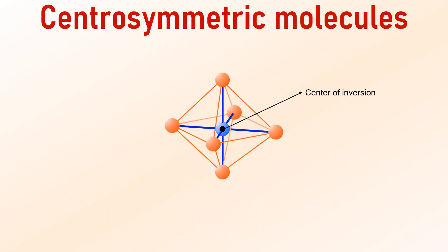An octahedral complex has a distinct structure characterised by six ligands symmetrically arranged around a central metal ion. At the heart of this arrangement lies a centre of inversion, meaning each atom or group in the molecule has an equal counterpart positioned directly opposite, mirrored through this central point.